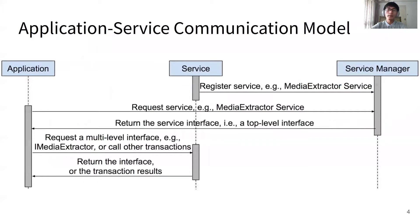In order to test Android native system services systematically, we dug into the details of Android native system services. Here is the communication model between application and service. A service will first register itself into the service manager, and then listen to and handle requests from applications. An application will query the service manager to obtain the interface of the target service, denoted as a top-level interface. The application can then utilize the top-level interface to retrieve a multi-level interface or to call other transactions. Further, the application could retrieve deeper multi-level interfaces and invoke corresponding transactions.